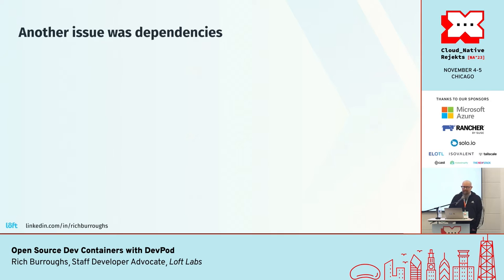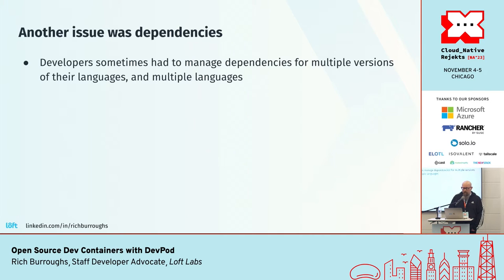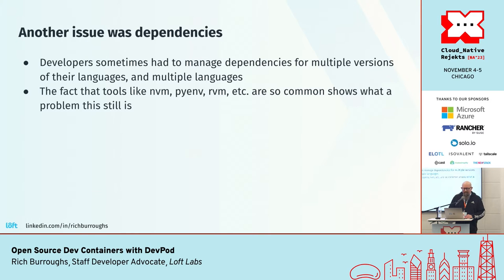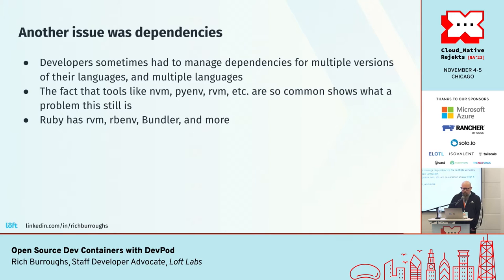Another issue back then — and still today — was dependency management. Developers sometimes had to manage multiple dependencies for multiple versions of their languages, or even multiple languages. The fact that tools like nvm, pyenv, rvm, etc. are so common shows what a problem this still is. For example, Ruby has a very complicated environment: there was rvm initially, then rbenv was invented, and Bundler is a big part of that ecosystem — managing dependencies in those Bundler files can make you want to pull your hair out.